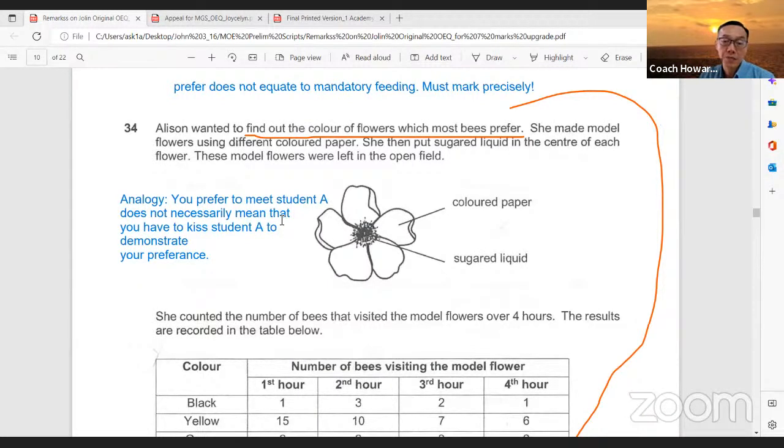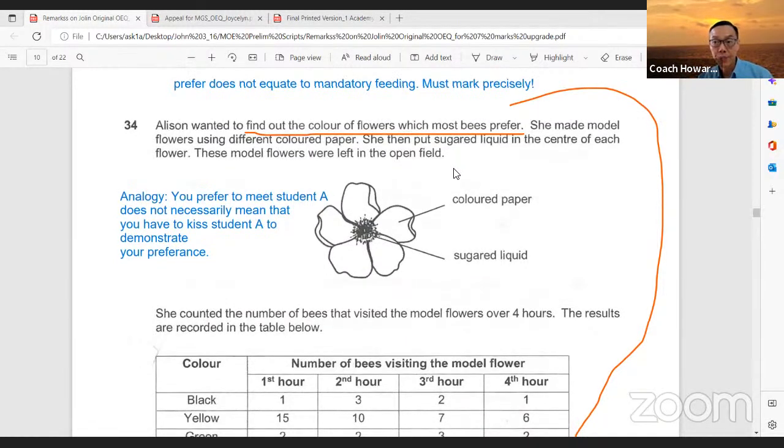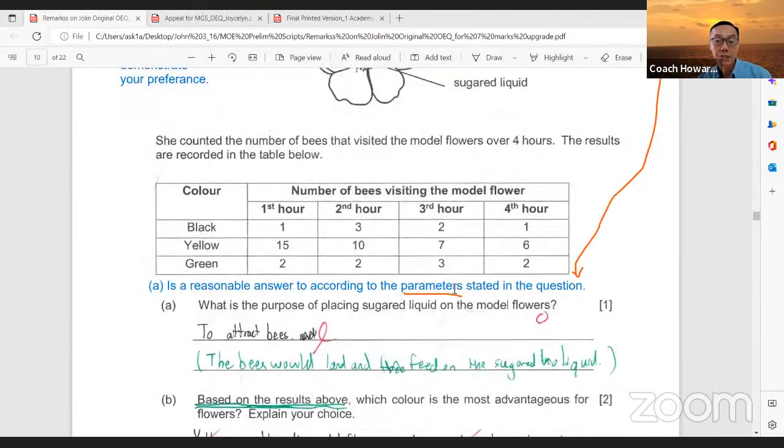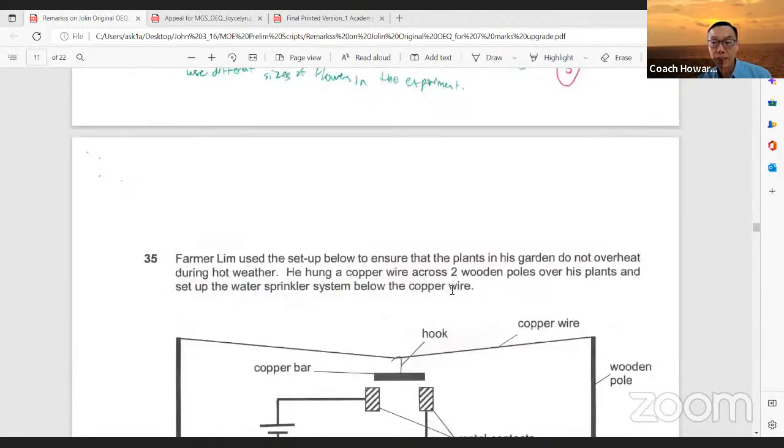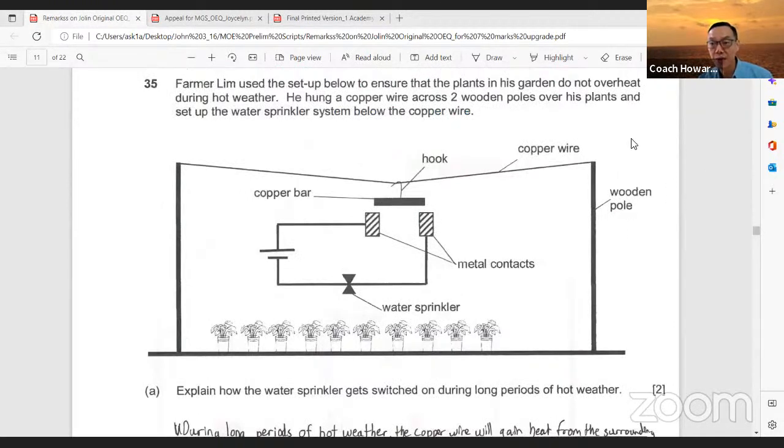Her answer is actually reasonable according to the parameters stated in the questions. The parameters says that wanted to find out the color of flowers which most bees prefer. Most bees prefer does not equate to mandatory feeding. That's why you must mark precisely. If you prefer to meet student A, does it necessarily mean that you have to kiss the student A to demonstrate your preference?